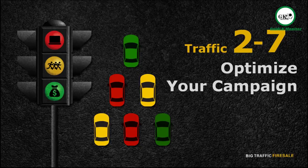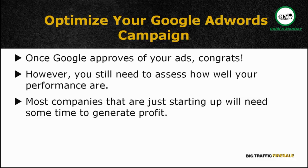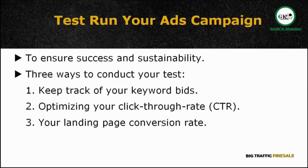Hey there and welcome back. We've already gone through seven modules of the Google AdWords series. You've learned what Google AdWords is, the mechanics, how to start your own campaign, and the strategies and tactics to go about it. We've finally reached the last module — it's all about optimizing your AdWords campaign. Once Google approves your ads, you're up and running. However, even on the right track, it's still hard to assess how well you're performing, and most campaigns just starting up will need some time to generate profit. There are three ways to conduct your tests: keep track of your keyword bids, optimize your click-through rate or CTR, and check your landing page conversion rate.